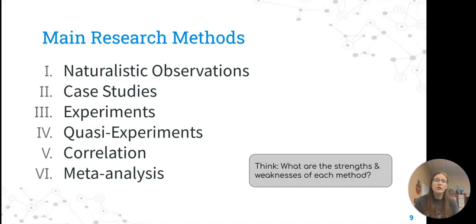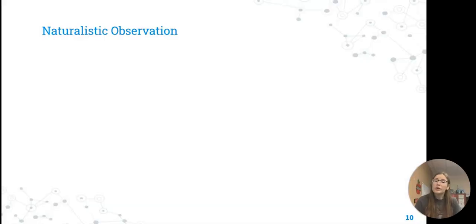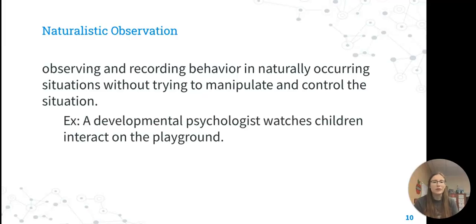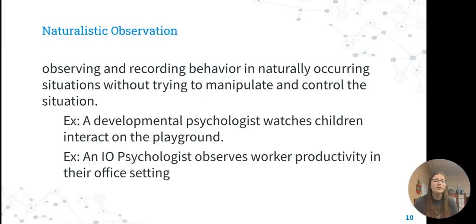This is just a tool for data collection. We're really going to get into these research methods as our big ones for the course. As we go along, think about what are the strengths and weaknesses of each method. Starting with naturalistic observation, this is observing people and recording behavior witnessed in the natural environment, where they typically are. There's no manipulation and no control. This can be done simply watching children play on a playground at school. We may even see industrial organizational psychologists observing worker productivity in their office setting.